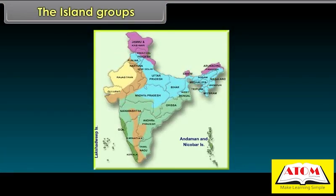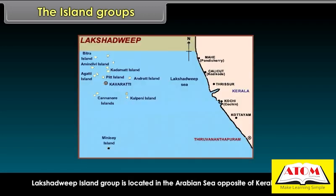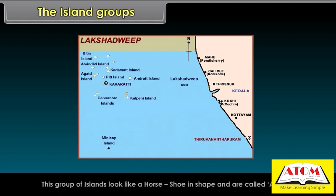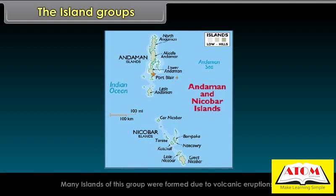India has two major island groups: the Lakshadweep Island Group and the Andaman and Nicobar Island Group. Lakshadweep is located in the Arabian Sea, opposite the Kerala coast. These islands were formed due to the deposition of microscopic coral polyps and are shaped like a horseshoe, called atolls. The Andaman and Nicobar Island Group is located in the Bay of Bengal, close to Myanmar in the north and Indonesia in the south. Many islands of this group were formed due to volcanic eruptions.